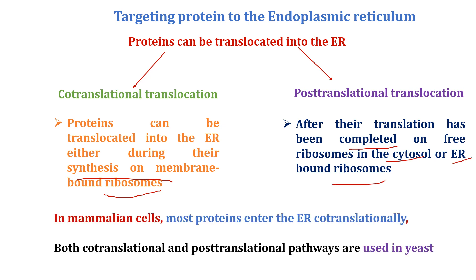In mammalian cells, most proteins enter the ER by co-translational translocation. In yeast, however, both pathways are used — both co-translational and post-translational translocation.